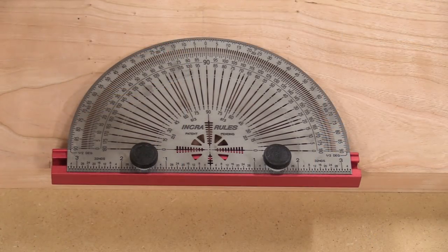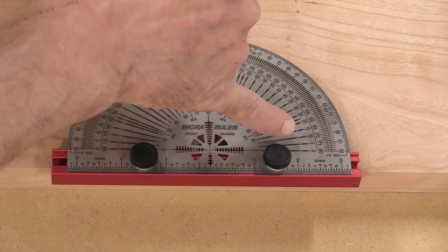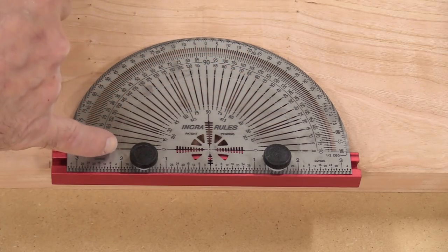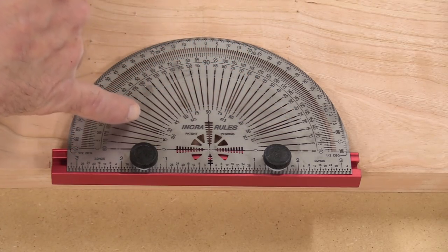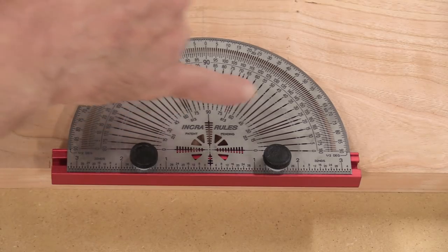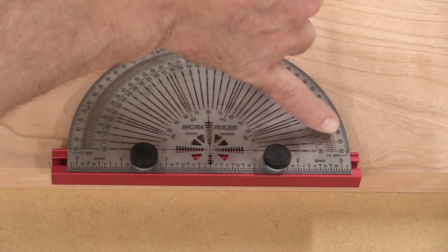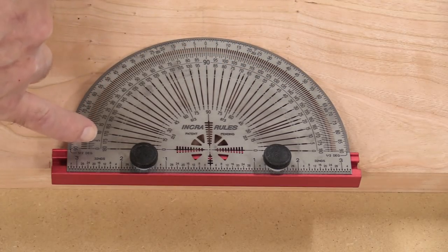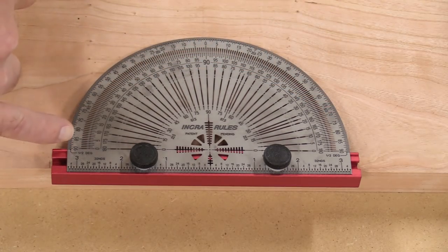This is the Inker 6 inch Precision Protractor. These laser cut slots are at 5 degree increments. There's also special slots for 22.5 and 67.5 each side of 90. These are 1 degree, and then on the outside you have half a degree.